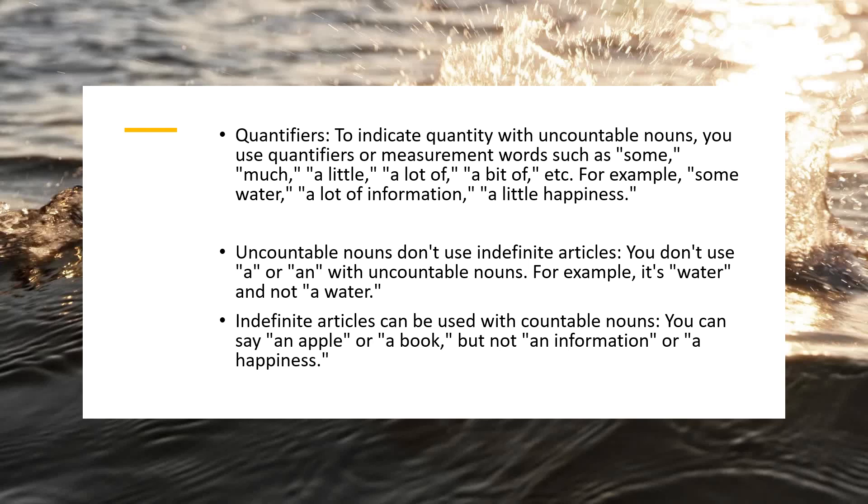Uncountable nouns don't use indefinite articles. You don't use a or an with uncountable nouns. For example, it's water and not a water. Indefinite articles can be used with countable nouns. You can say an apple, a book, but not an information or a happiness.